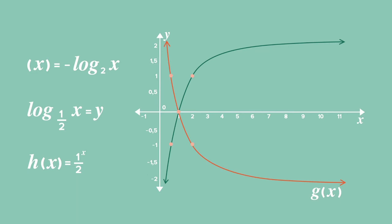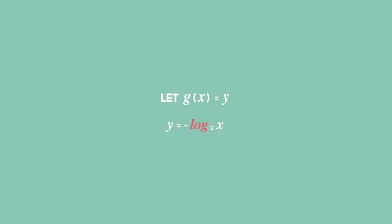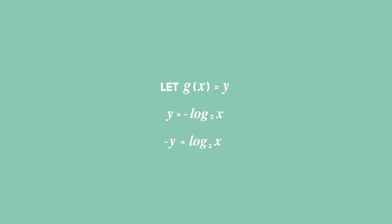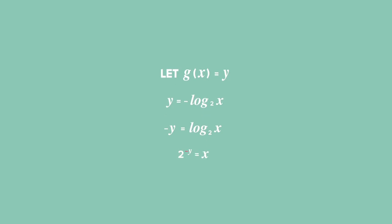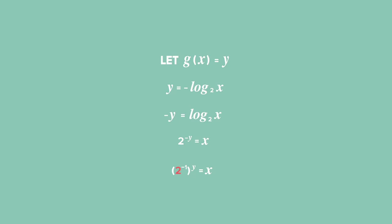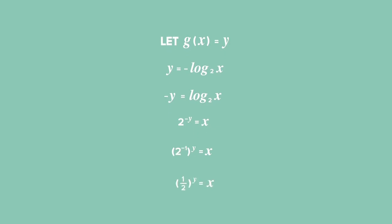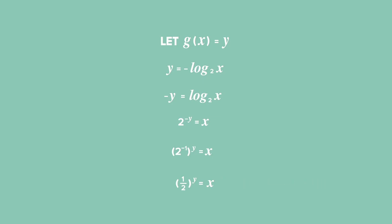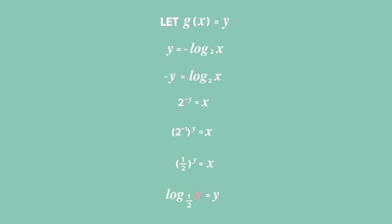We arrive at that equation for h of x in the following way. Let g of x equal y, then y equals negative log x base 2. Dividing both sides by negative 1, we get negative y equals log x base 2. Now change from log to exponential form and you get 2 to the power of negative y equals x. You can rewrite the left-hand side as 2 to the power of negative 1, all raised to the power of y. Since 2 to the power of negative 1 is one half, therefore one half raised to the power y equals x, which is an exponential function. Converting from exponential to log form gives y equals log x base one half.